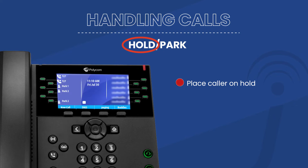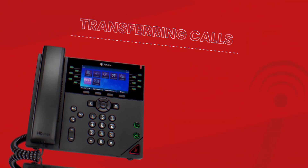To park a call, simply press any of the available park buttons. The button will turn red while the call is parked there. To retrieve the call, simply press the appropriate park button on a different phone — it should be the same number you used when you parked the call, and will also be red.